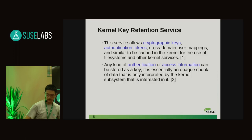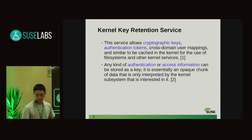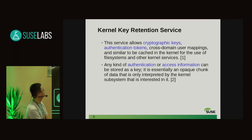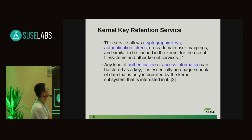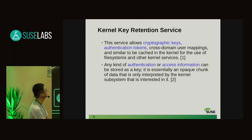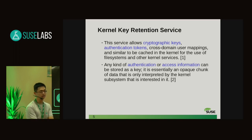First, I want to introduce some general knowledge about the key retention service. It's a service in the kernel that can be used to carry cryptographic keys, authentication tokens, or cross-domain user mapping — something like that. Actually, it can carry anything, any blob from user space. But in some cases the blob must be trusted by the TPM, which I will describe later. Any kind of authentication or session information can be stored as a key.